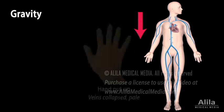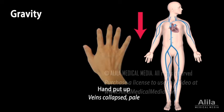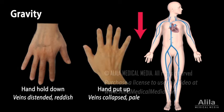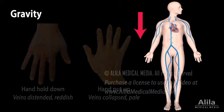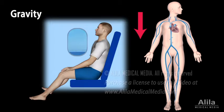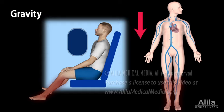Gravity: in an upright position, venous blood from the head and neck flows downhill to the heart simply by gravity. Blood from the lower body and limbs, on the other hand, has to overcome gravity to return to the heart. People who stand or sit still for extended periods of time may suffer from venous blood pooling in the legs. This happens when venous pressure is not sufficient to override gravity, and venous return is reduced.